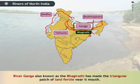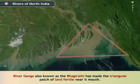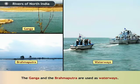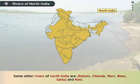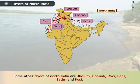River Ganga, also known as the Bhagirathi, has made the triangular patch of land fertile near its mouth. The Ganga and the Brahmaputra rivers are used as waterways. Some other rivers of North India are Jhelum, Chinab, Ravi, Beas, Satlaj and Kosi.